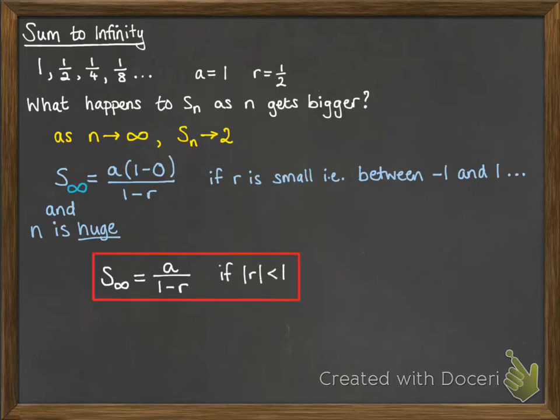So our sum to infinity formula can then be simplified, and this only works if the modulus of r is less than 1 — that makes r small enough for this to work. It won't work if r is a big number, because then that term in our sum formula won't become 0. You don't need to reproduce how to get to this formula; it just helps you understand where it came from. You just need to know how to use the formula.